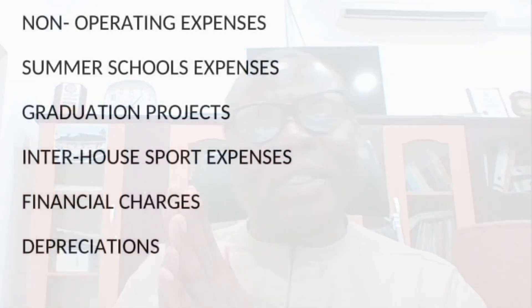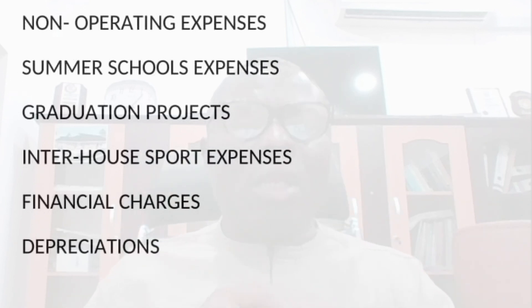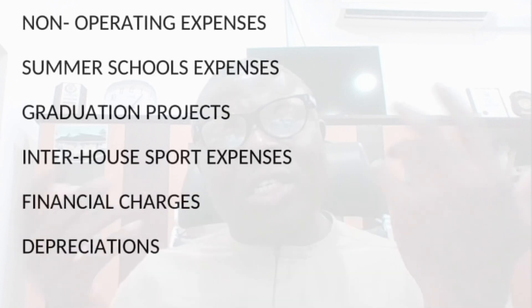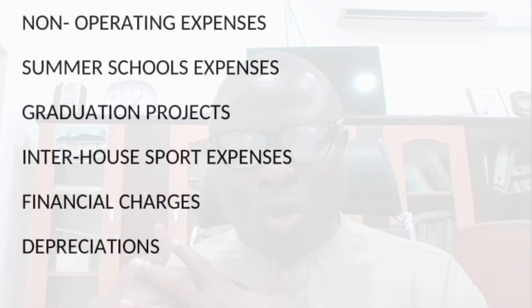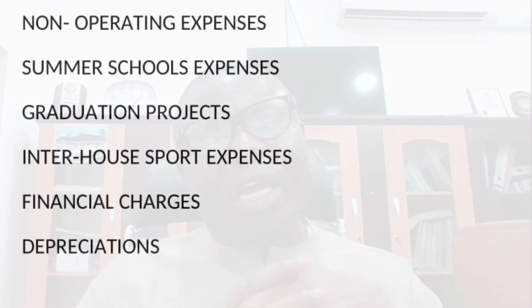Non-operating expenses include summer school expenses, graduation expenses, valedictory service expenses, inter-house sport expenses, and financial costs. If you have collected a loan, you need to be paying back the principal and charges. Then we have depreciation — that comes in not as an actual cash expense, but you are making provisions for the renewal of such items subject to depreciation.